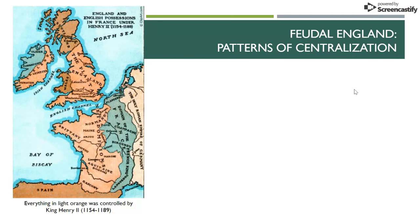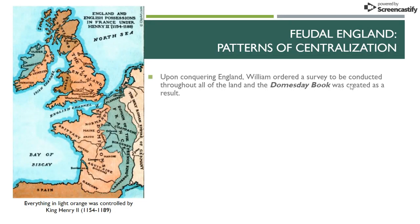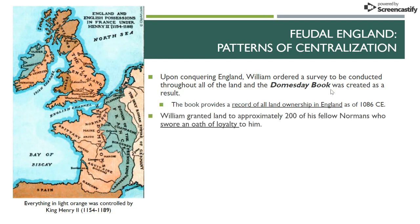Once William takes over England, he's going to set up essentially a feudal state. The first thing he's going to do is publish the Domesday Book, which comes out in 1086. It essentially records land ownership, but very shortly afterwards William is going to rearrange that land ownership. What he does is divide up the territory among approximately 200 of his fellow Norman lords. They get the land in exchange for loyalty, and this is essentially how feudalism works.